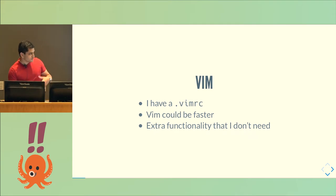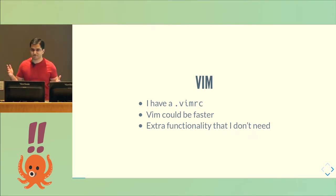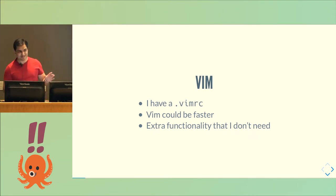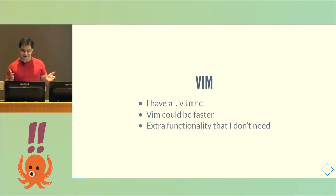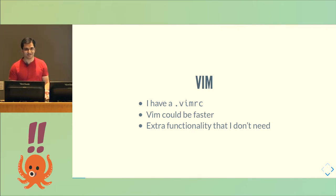There's a whole bunch of functionality in Vim that I just don't even use. Like, there's a whole tab engine, for example, that I just don't care about. The only tab settings I use for my tab length are 4. So why does it need to handle a tab length of 3? Who uses a tab length of 3?